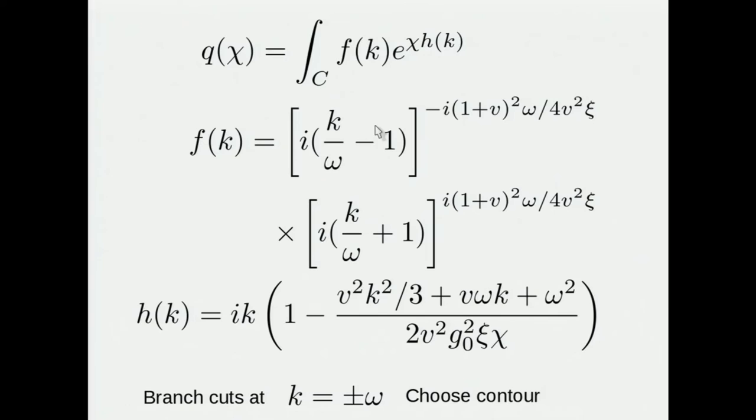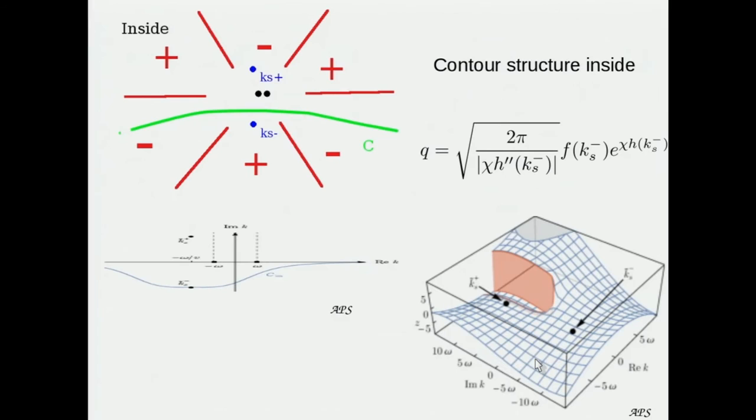There's some function F, which has got some poles in it, at K equals plus or minus omega. Notice that the exponent here is complex. It's not a real exponent. Plus the H, the term that enters into this exponent, also has some branch cuts, which one has to take into account, and one has to suitably choose the contour.